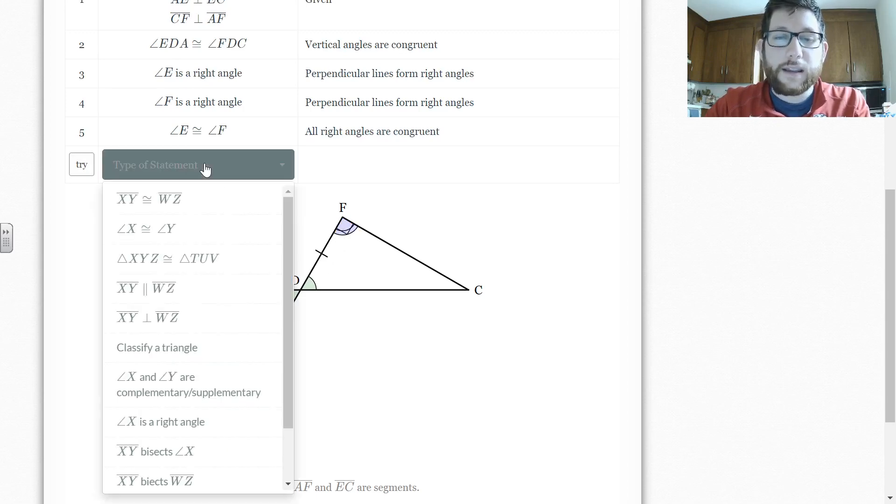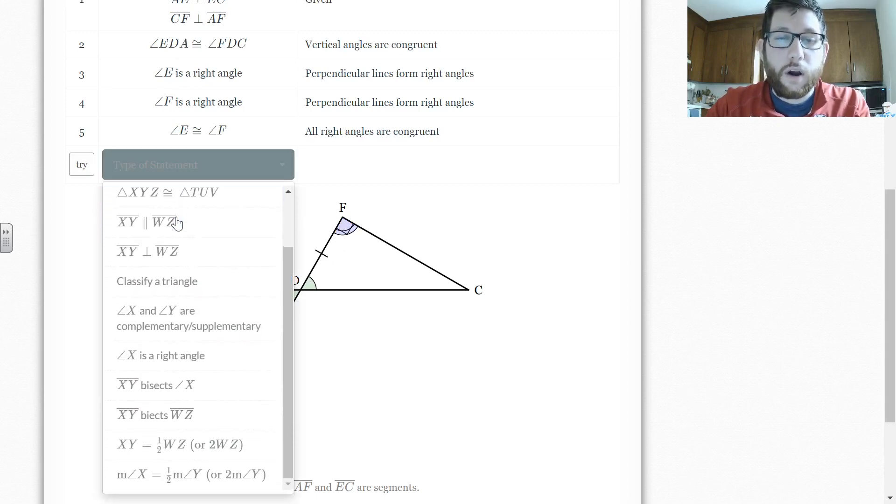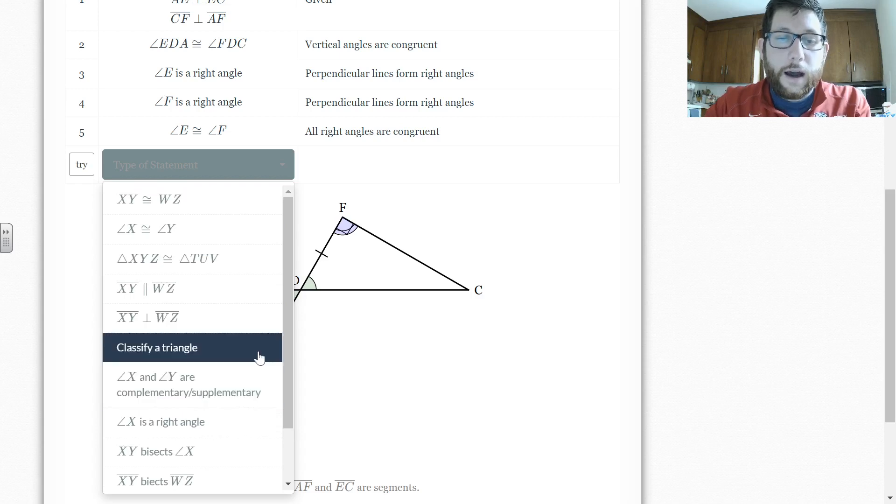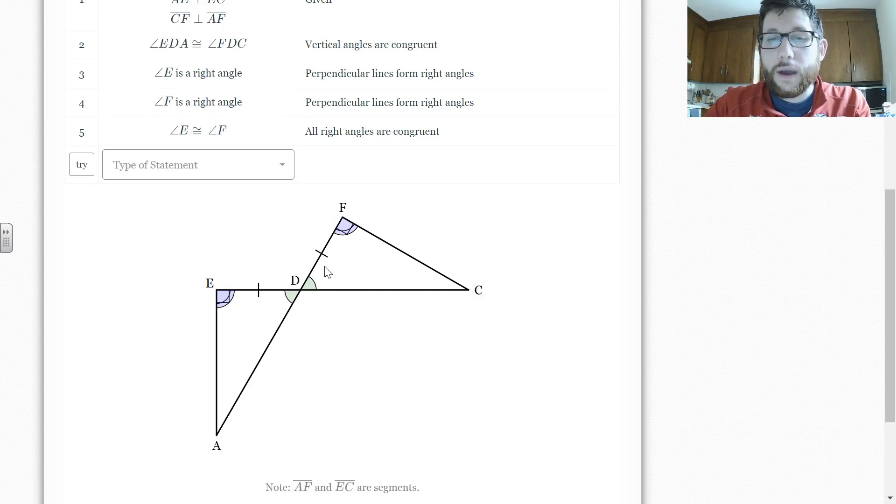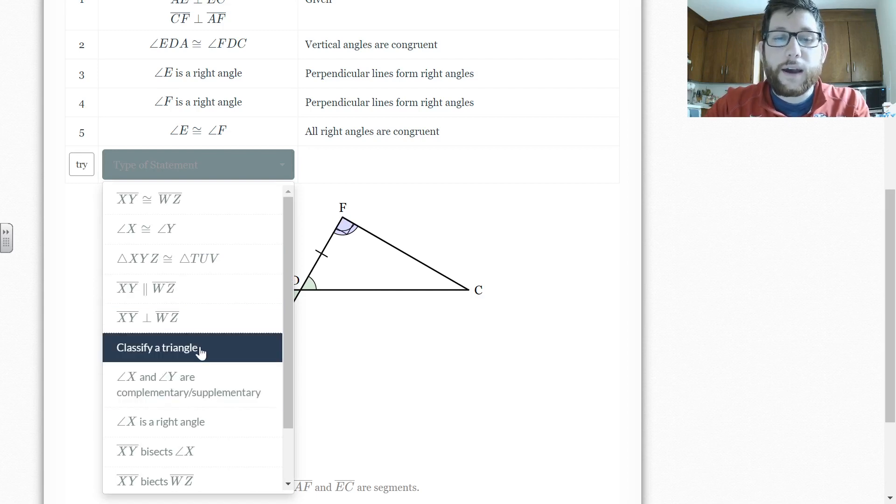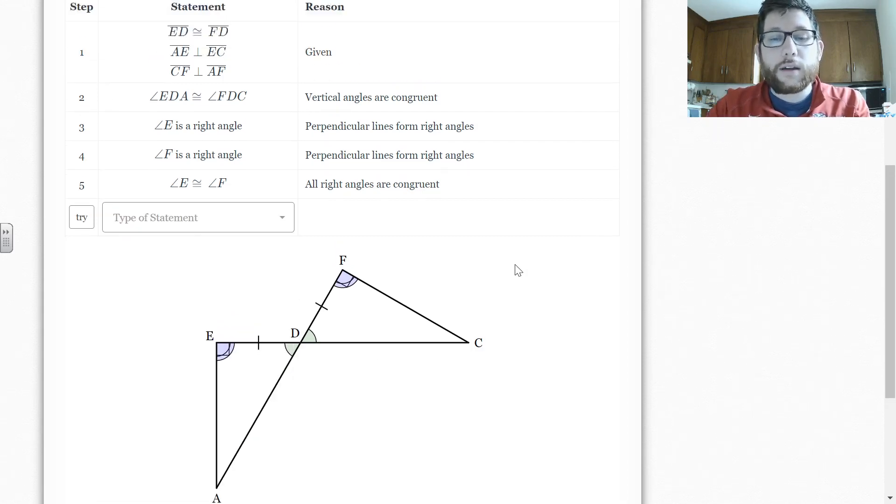So now I could say that the triangles are congruent. Notice classify a triangle. Let's say that this was, instead of having vertical angles, we had right angles and a side and a side, and we had HL. They're going to ask you to classify the triangles as right triangles before you use HL. So that's another kind of half step that we didn't really do just in case you get caught or stuck.